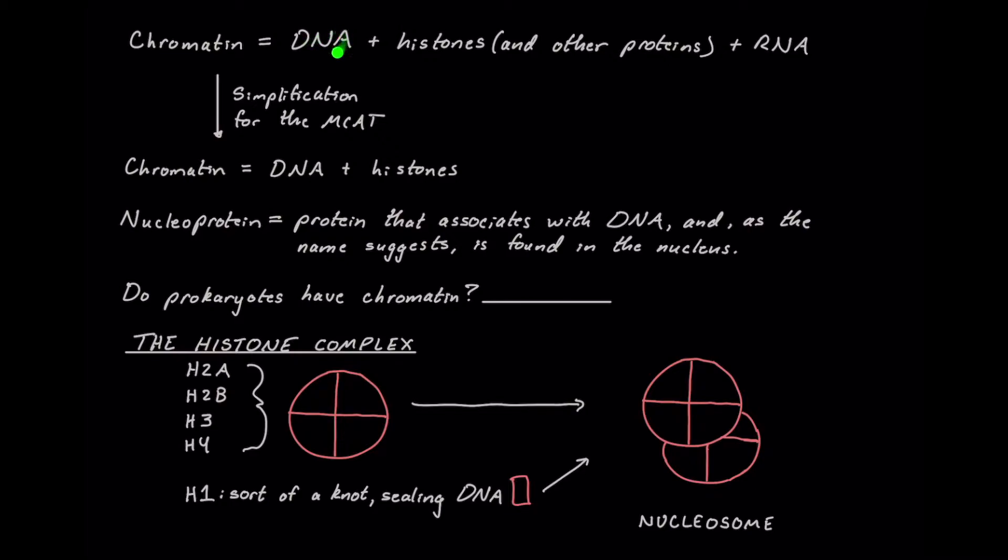Chromatin is actually just DNA. We're looking at a chromosome, of course, is the way we package that DNA, plus histones and other associated proteins. So not just histones, but the majority of what we're going to be looking at today are histones and any associated RNA that we have with that chromatin. However, for the MCAT, we can usually simplify this to just being the combination of DNA and histones together.